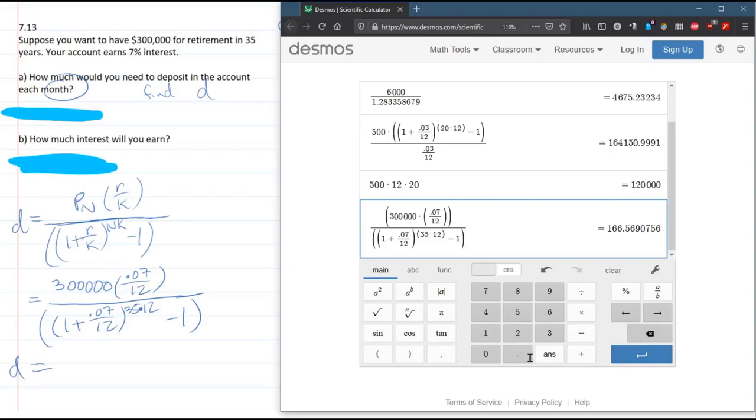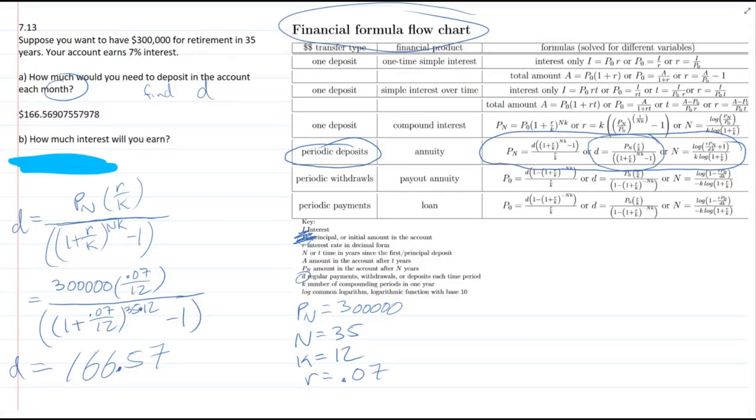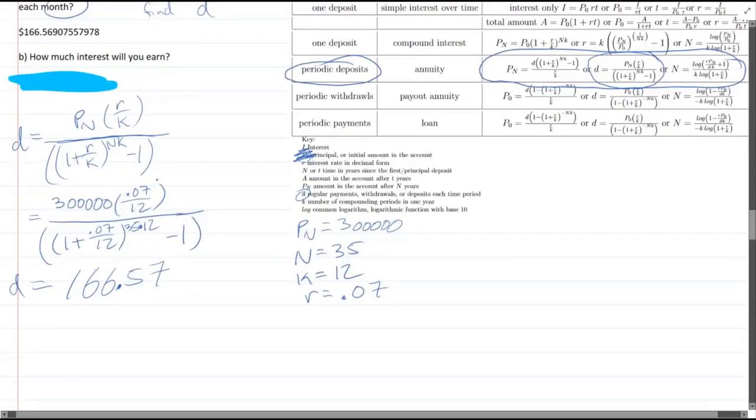Now the minus 1, if you look, that took us down below. So that minus 1 is not up inside the exponent. It's down below. And we'll do a close parenthesis. And there we see our answer, 166.5. I'll round it, 166.57. So that's how much we'll deposit each month. So let's uncover that answer. And we see you got the first one.